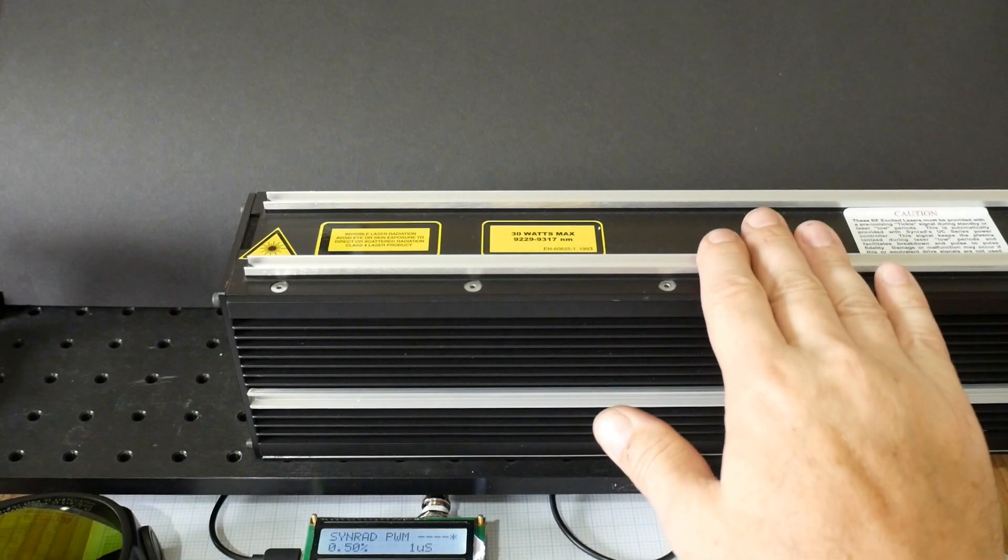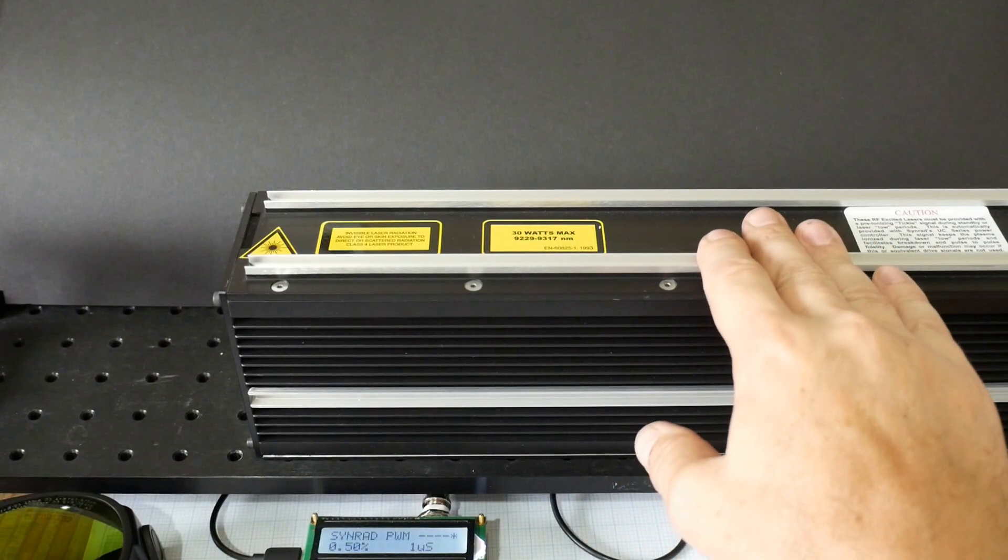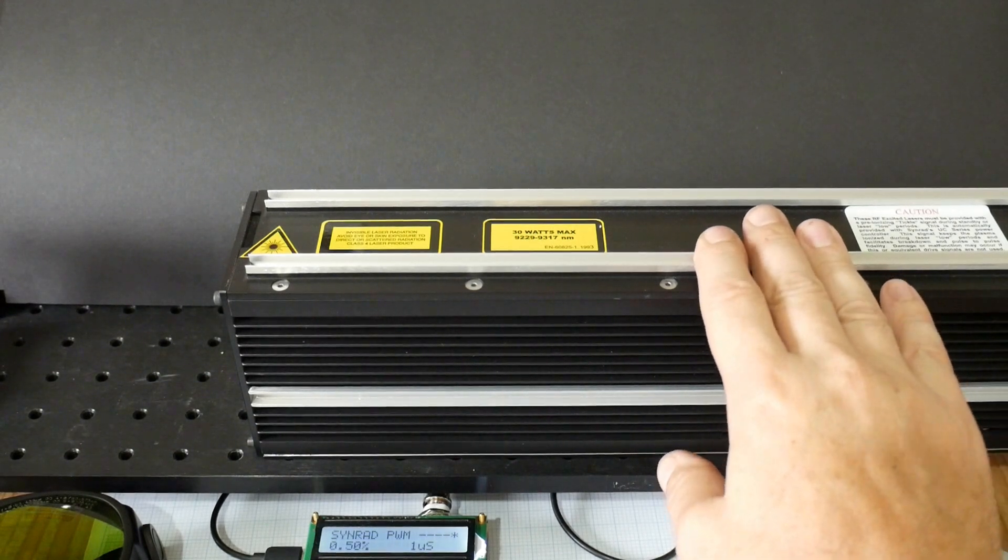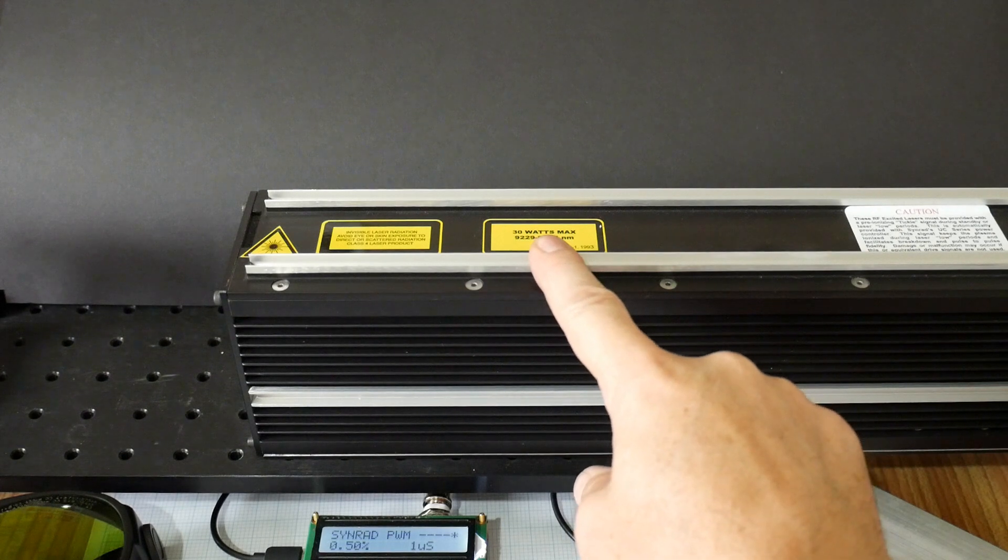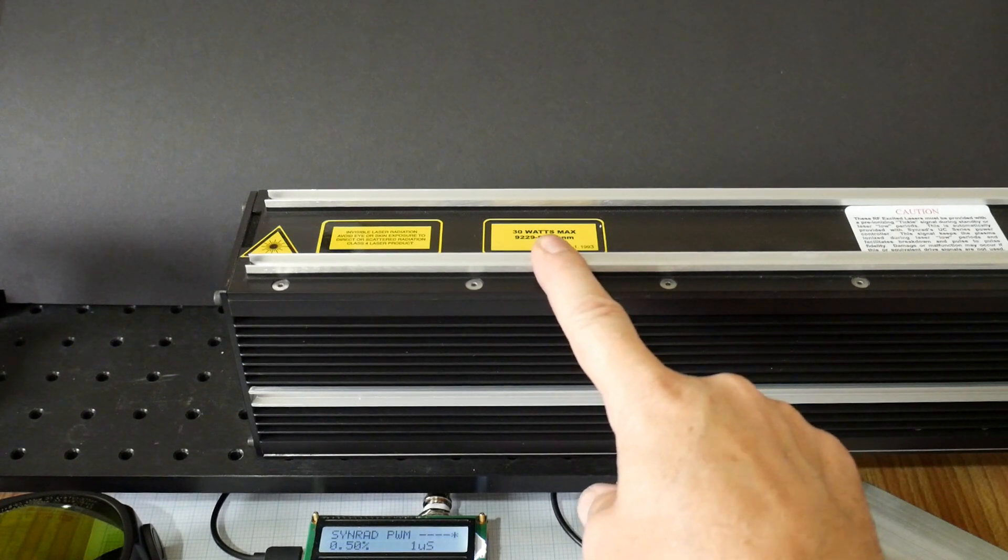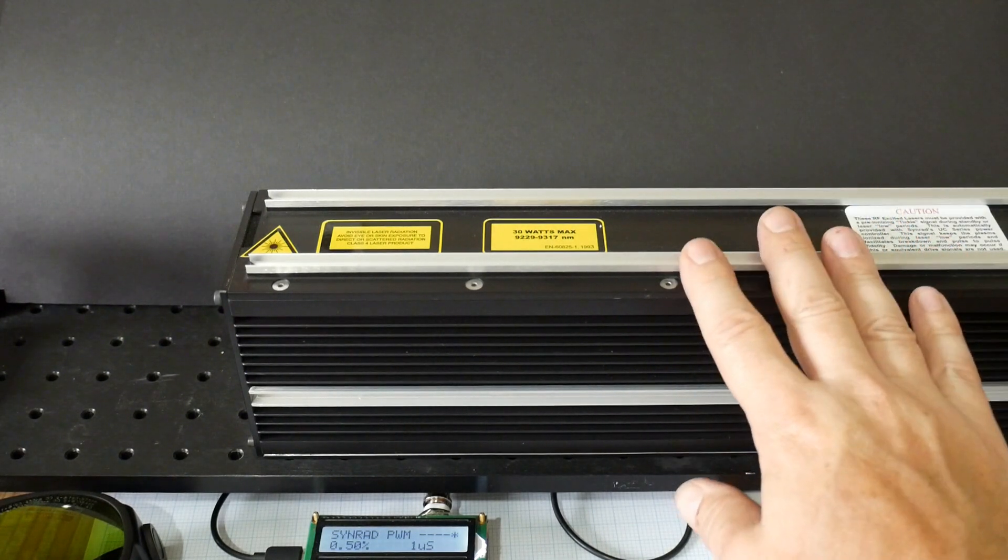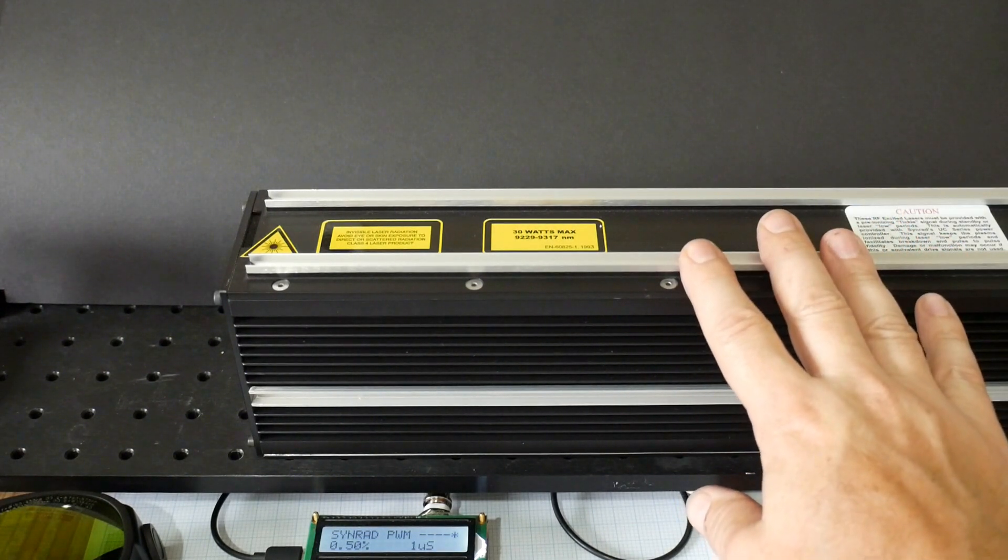I have here a Synrad 48-2, 20 watt carbon dioxide laser that I repaired in a previous episode. Unusually this laser emits at a wavelength of 9.3 microns as opposed to the usual 10.6 microns. These are really nice CO2 lasers, compact and air cooled, ideal for bench top experiments.